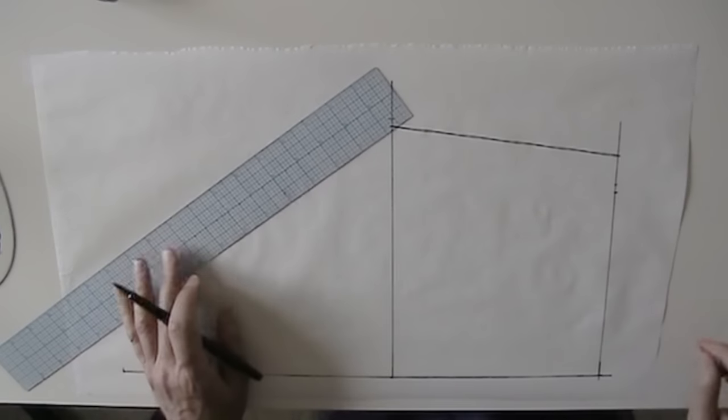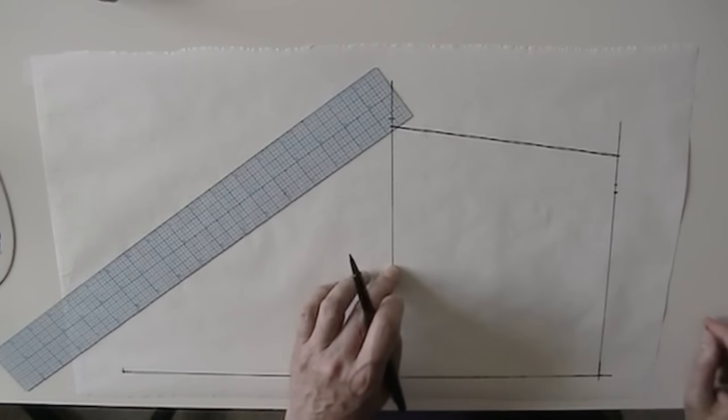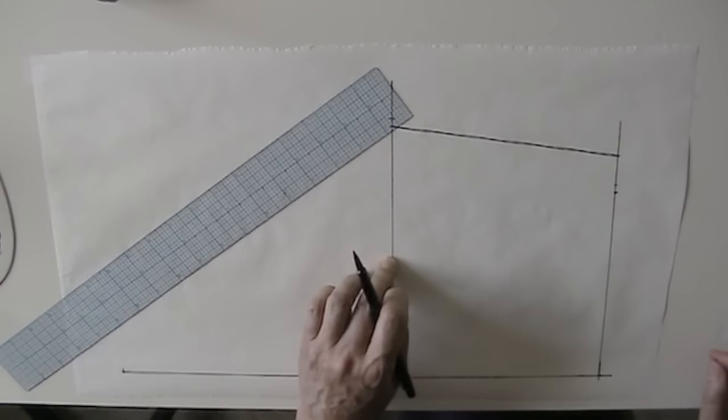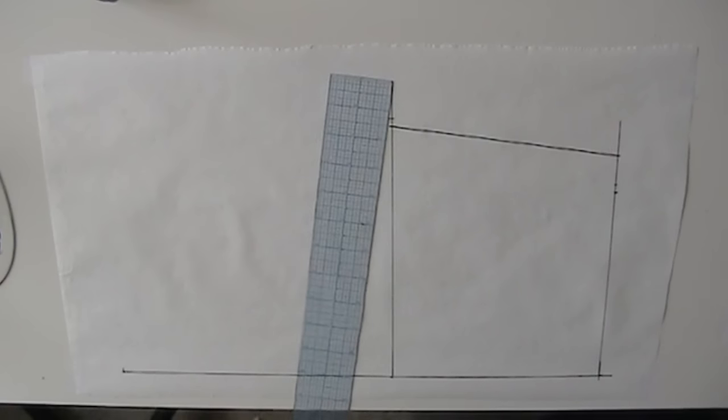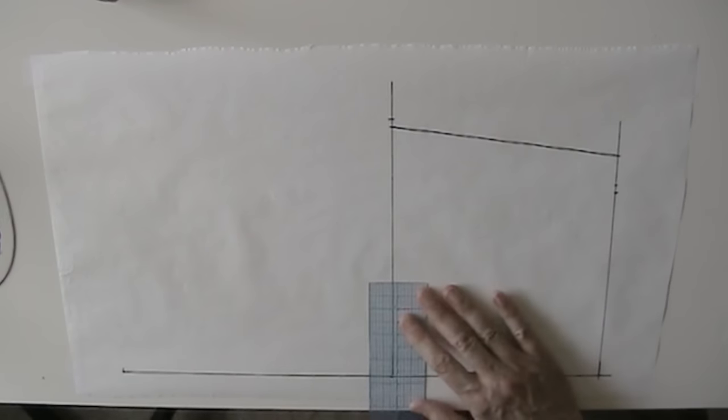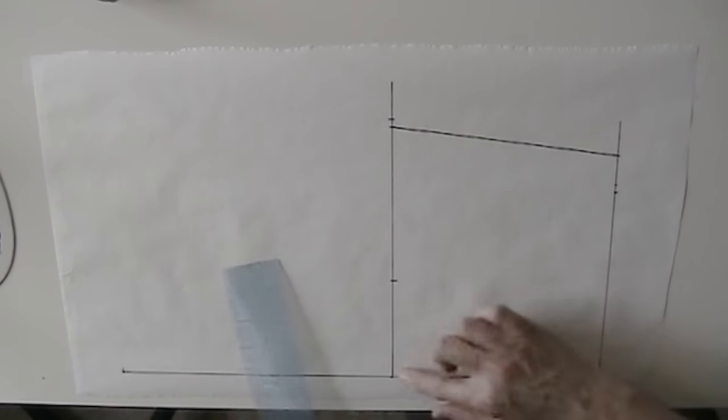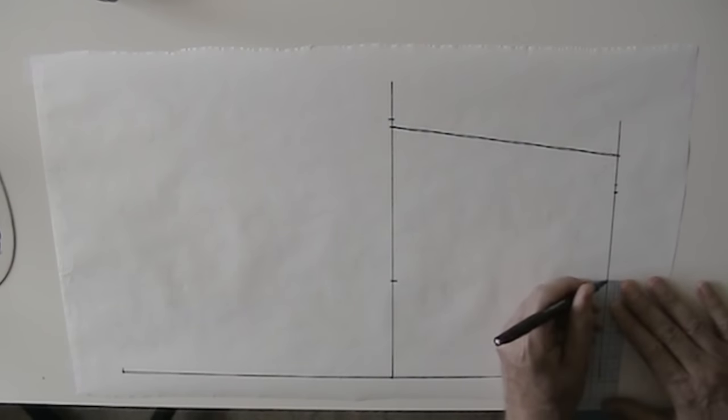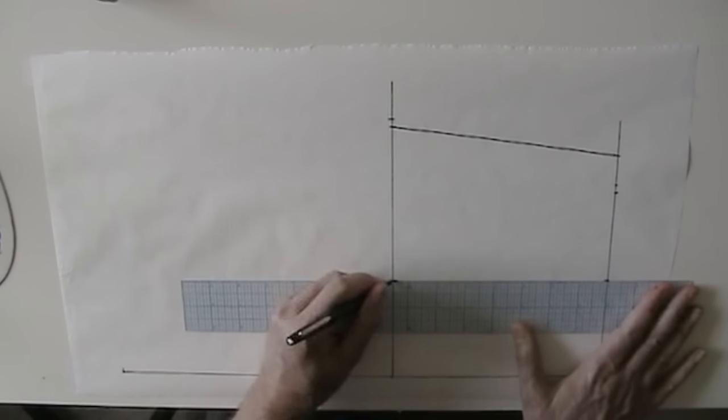So now I need to draft the waist dart. Now the location of the waist dart, I like to put the waist dart in the back in approximately the same location as it is in the front, the same distance from center back to dart as the front dart is going to be from center front. So to get that, I'm going to refer to my measurements for the distance between apex points, which was seven and a half inches or half of that three and three quarters.